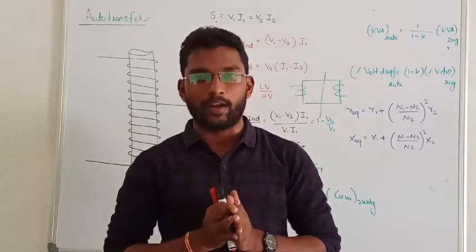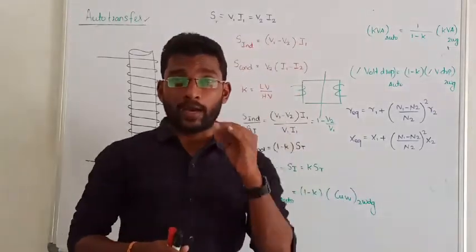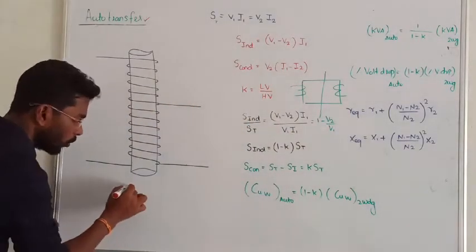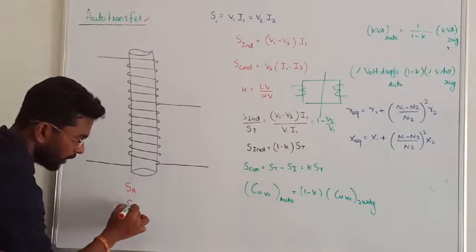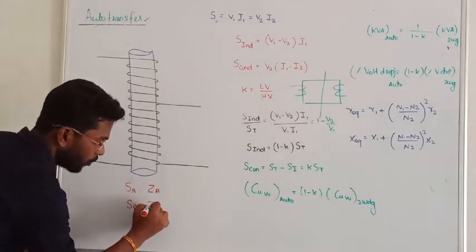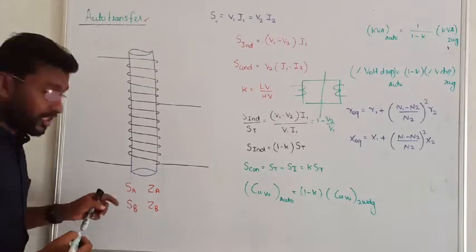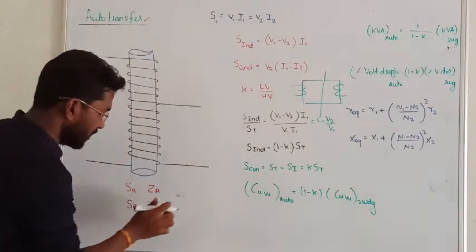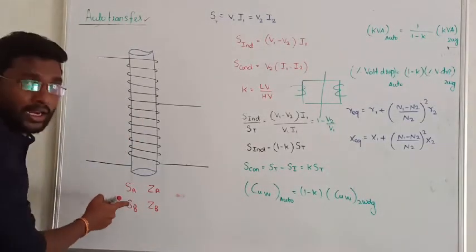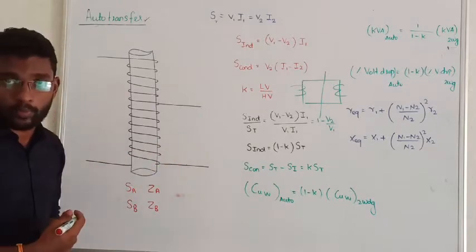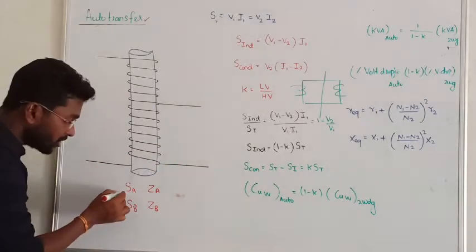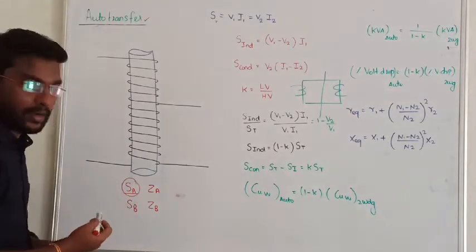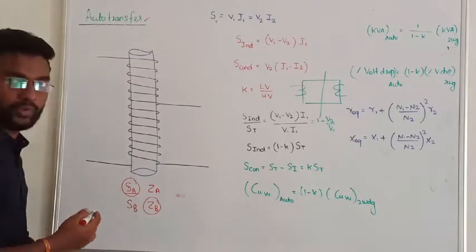In the last lecture we saw the parallel operation of transformers. One mandatory condition is that if two transformers are given with two different kVA ratings, you have to choose any one apparent power as your base kVA. Then you have to calculate and convert the values to the new base kVA.